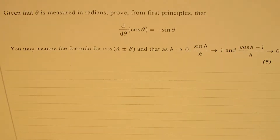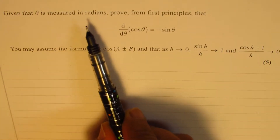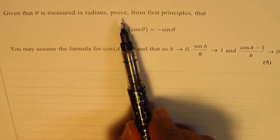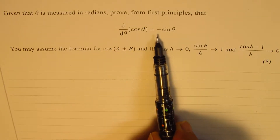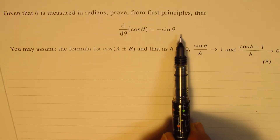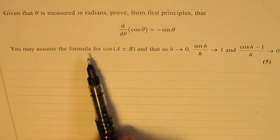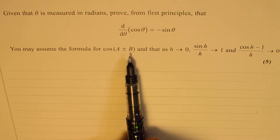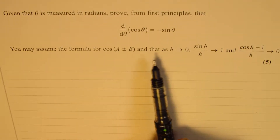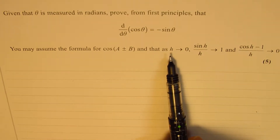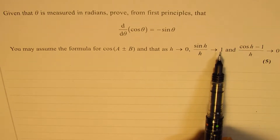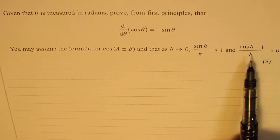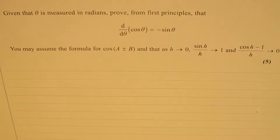Question number 9. Given that theta is measured in radians, prove from first principle that d/dθ of cos θ is minus sine θ. You may assume the formula for cos(a ± b), and that as h approaches 0, sine h over h approaches 1, and cos h minus 1 over h approaches 0.